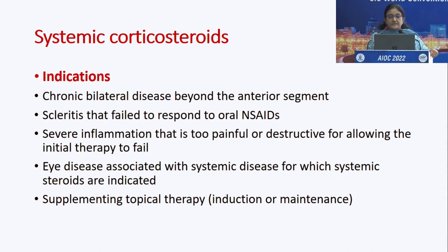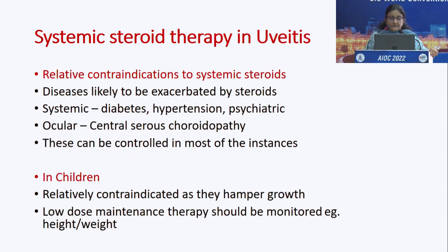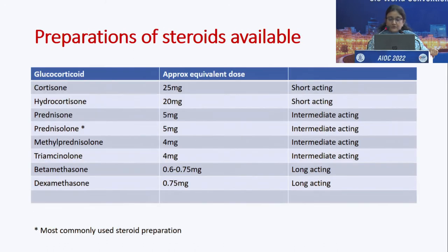Indications for systemic corticosteroids include chronic bilateral diseases beyond the anterior segment, scleritis that has failed to respond to NSAIDs, severe inflammation too painful or destructive to allow initial therapy to fail, eye diseases associated with systemic diseases for which systemic steroids are indicated, and supplementing topical therapy. Relative contraindications include diseases likely to be exacerbated by steroids such as diabetes, hypertension, or psychiatric problems, and ocularly, pre-existing CSCR. In children, they are relatively contraindicated as they hamper growth; a low-dose maintenance may be used with very close monitoring.